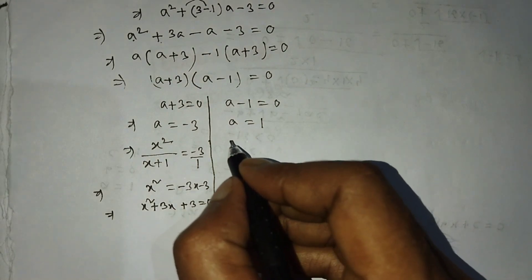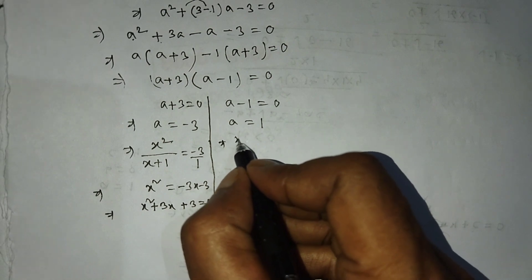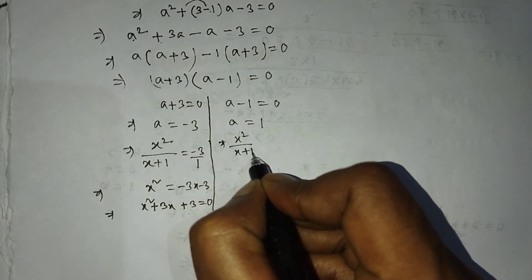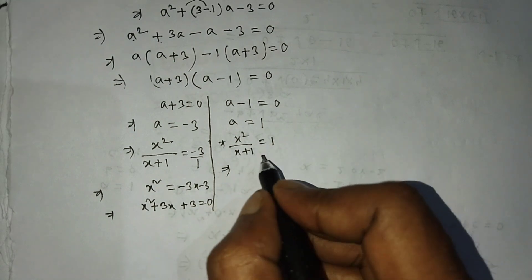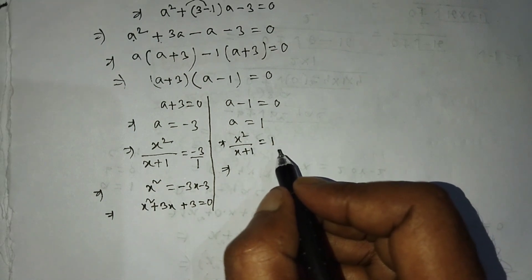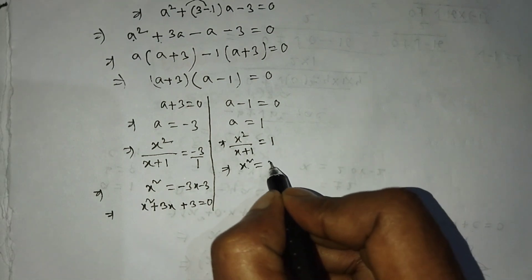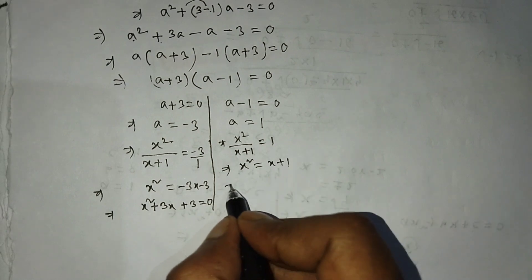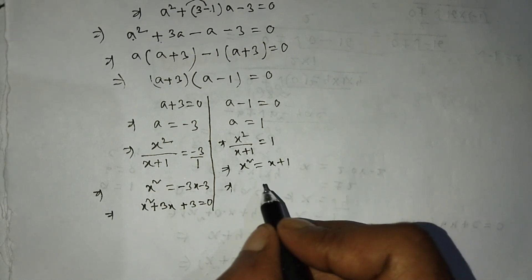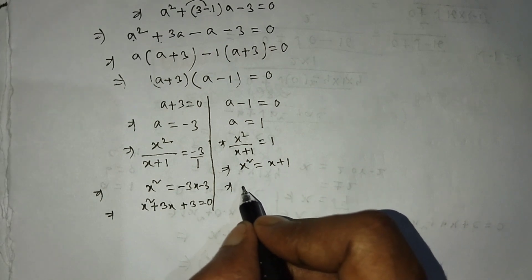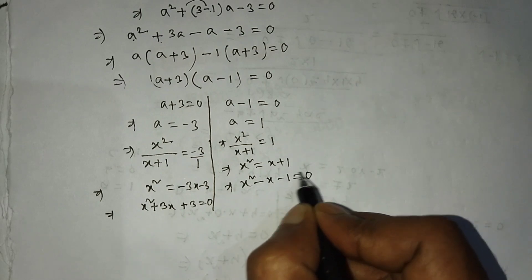For A equals 1: x squared over (x plus 1) equals 1. By cross multiplication, x squared equals x plus 1. Transposing x plus 1 to the left side gives x squared minus x minus 1 is equal to 0.